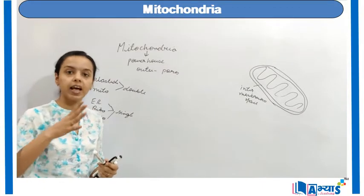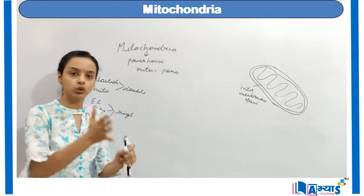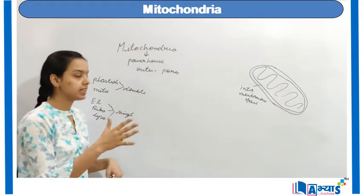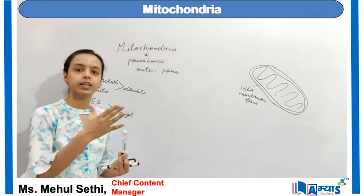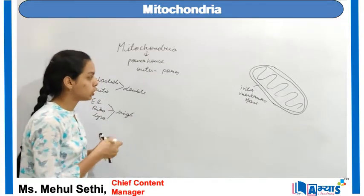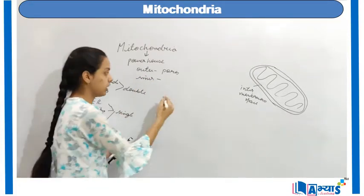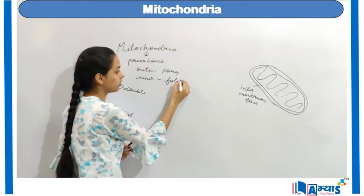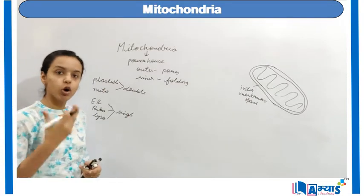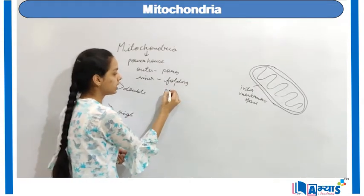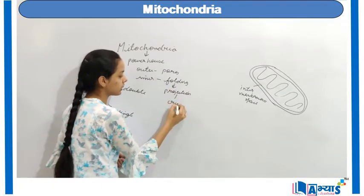Because the outer membrane has holes, it allows the transfer of substances from outside into the mitochondria — the outer membrane is porous in nature. The inner membrane has some folding, and because of this folding it has projections. These projections are referred to as the cristae.